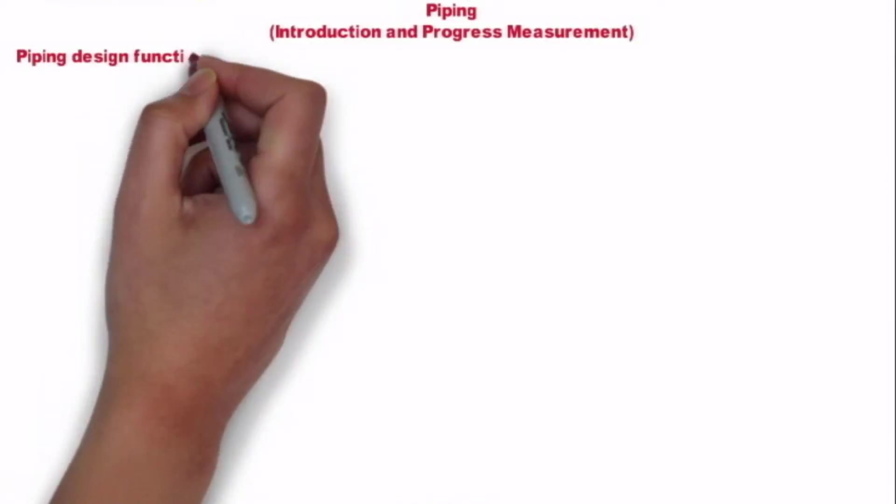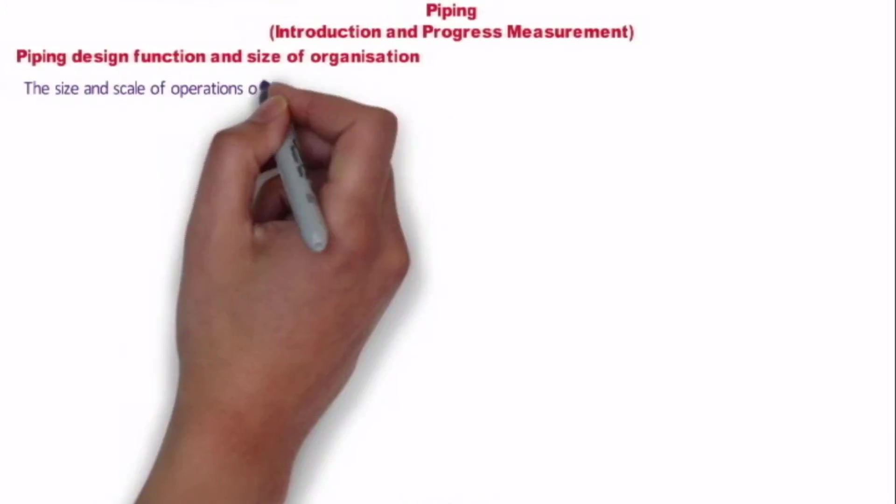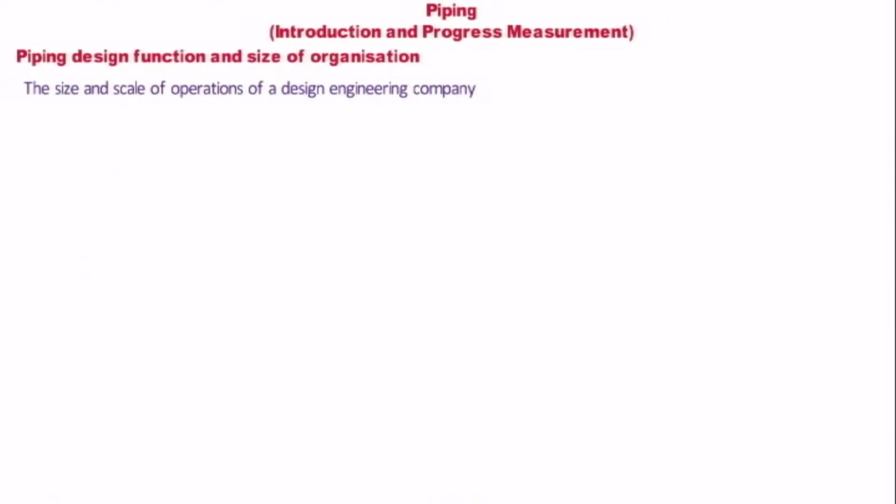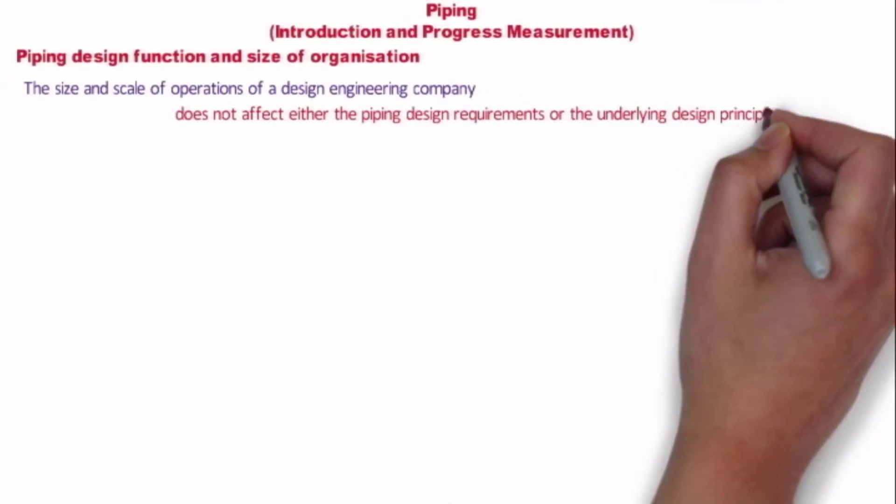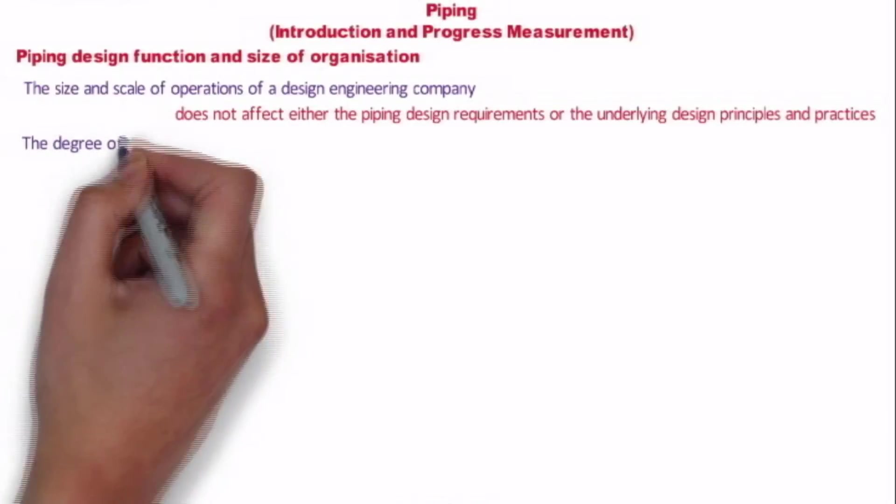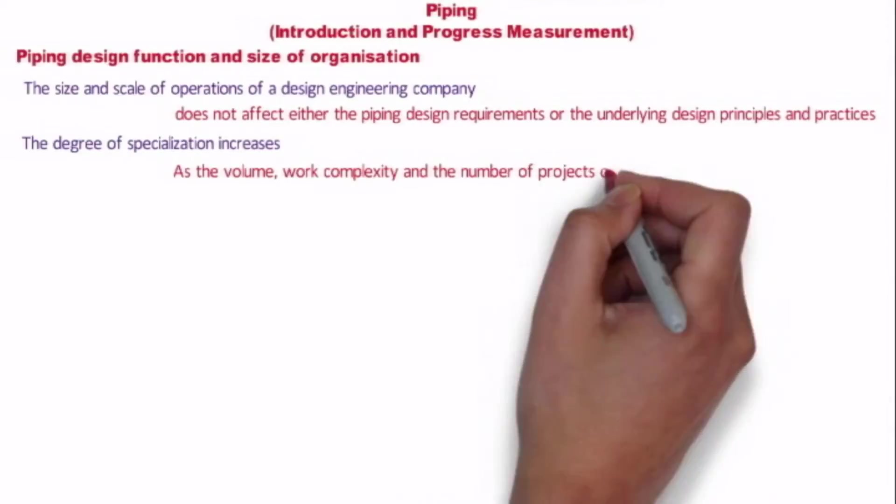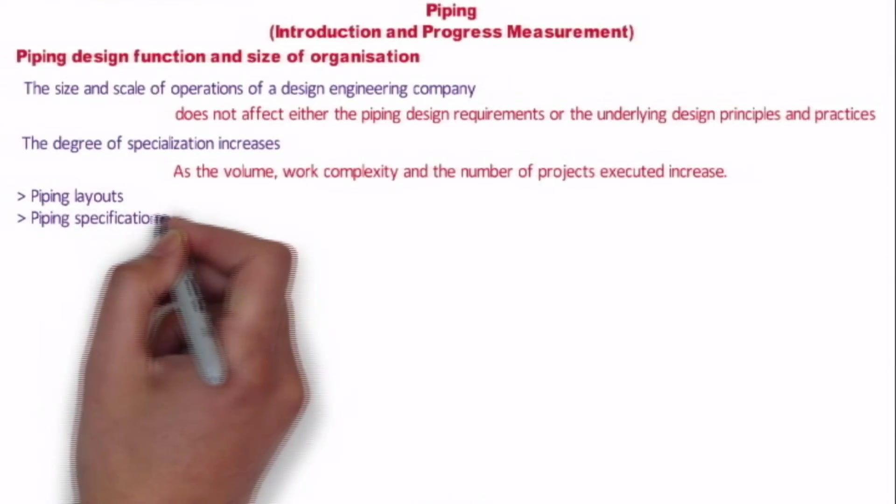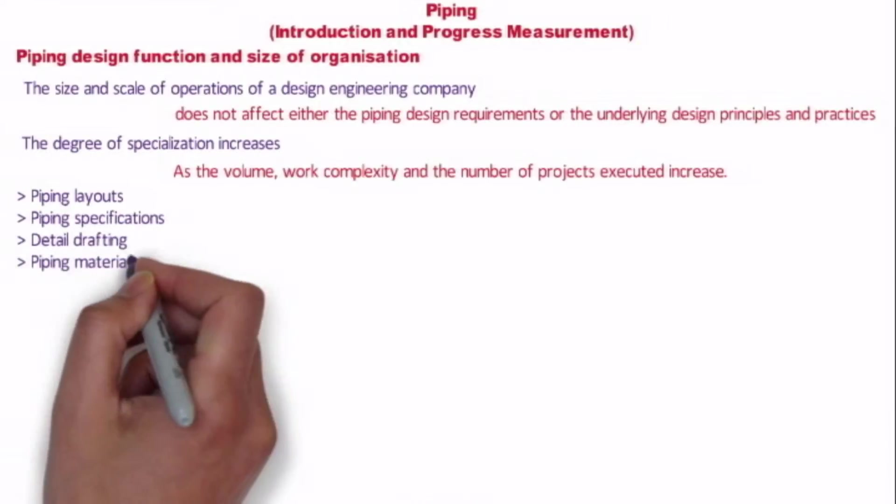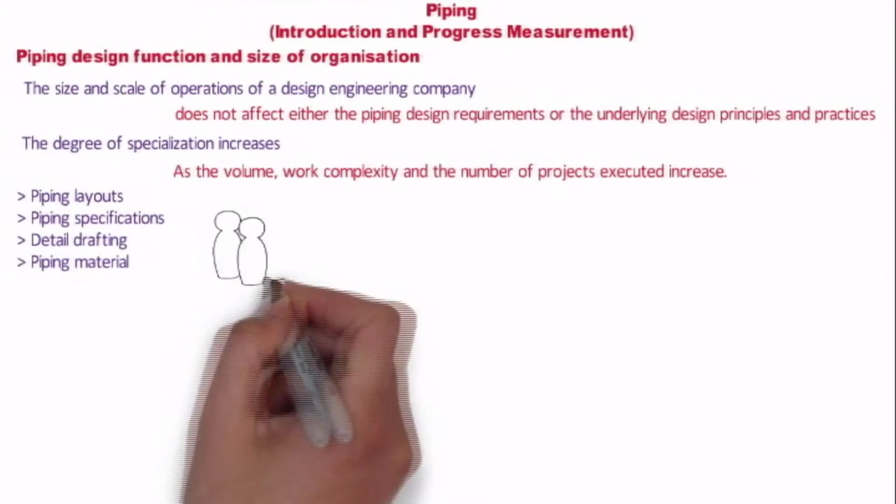So what is the piping design function and size of organization? The size and scale of operation of the design engineering company does not affect either the piping design requirement or underlying design principle and practices. As the volume of work, complexity and the number of projects executed increases, the degree of specialization increases. Piping layout, piping specification, detailed drafting and piping material listing begin to emerge as functions handled by separate specialist groups within the department.